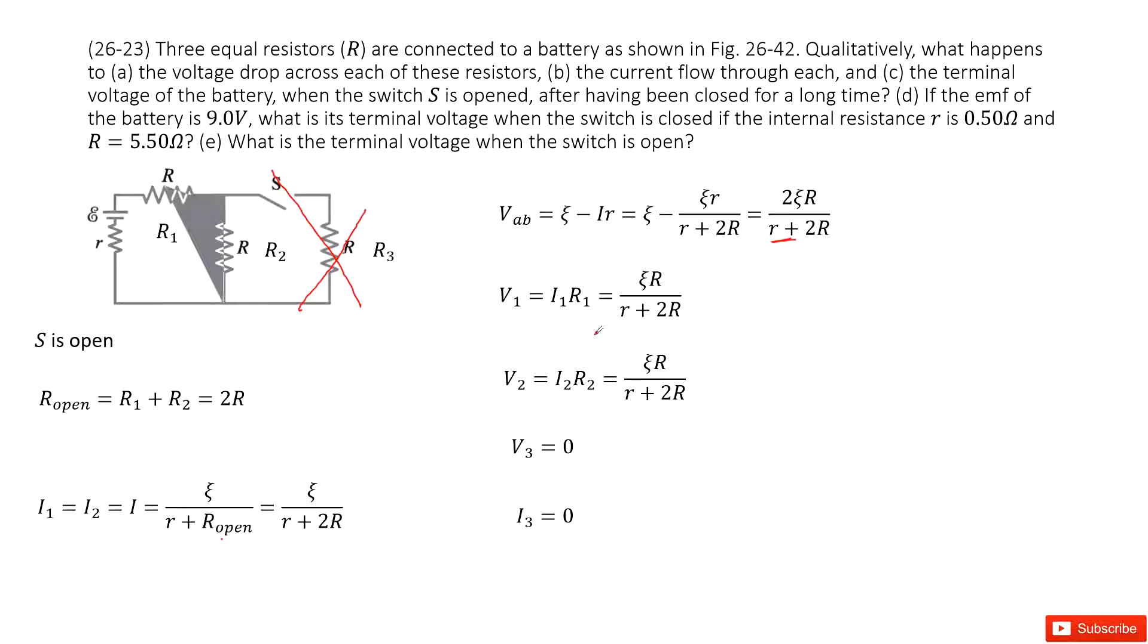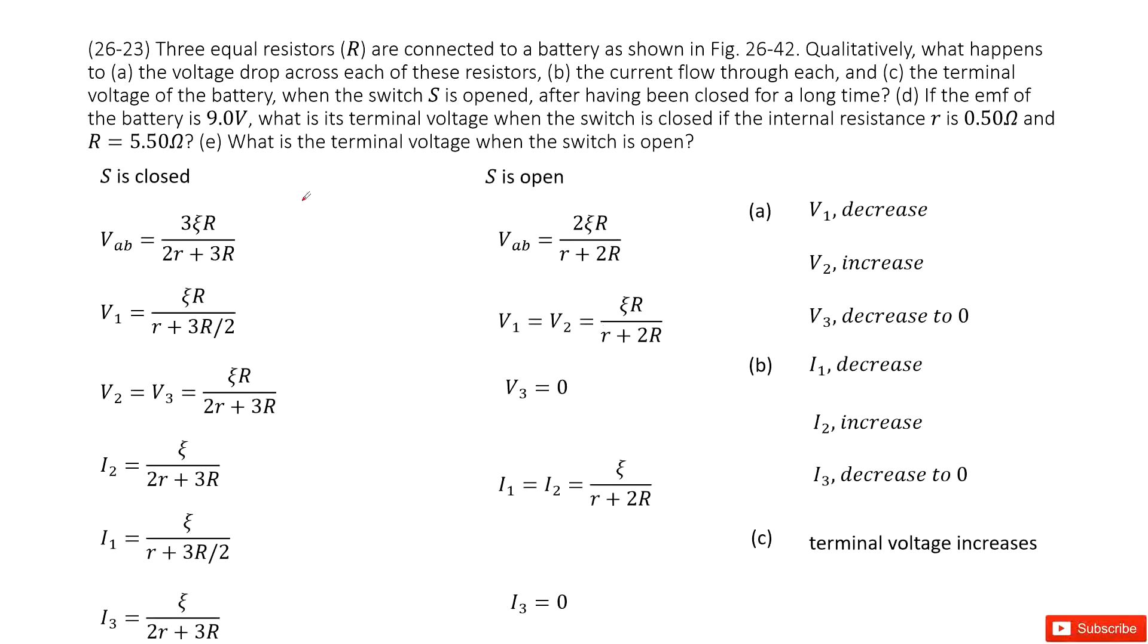Now we can see, we can write this result for S is closed and write the quantities for S is open. Now we can see, first the case A, what happens to the voltage drop across each of the resistors. So now, what happens to the voltages?